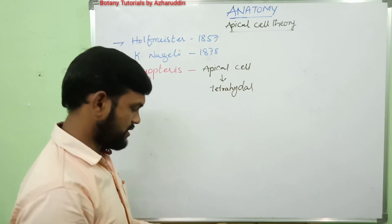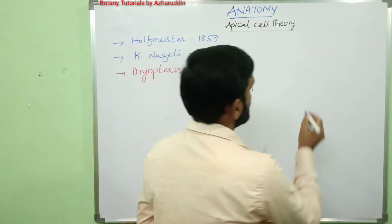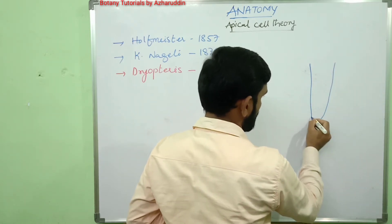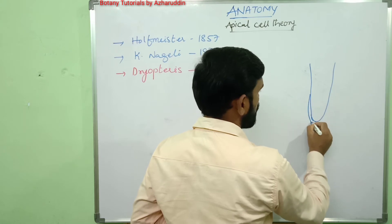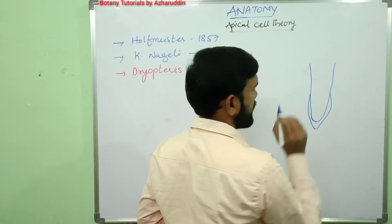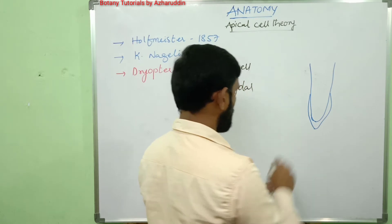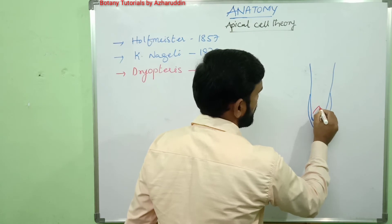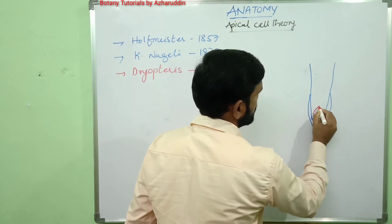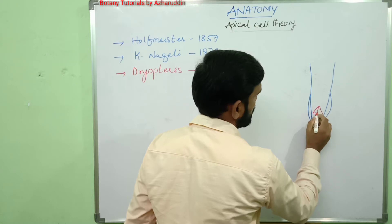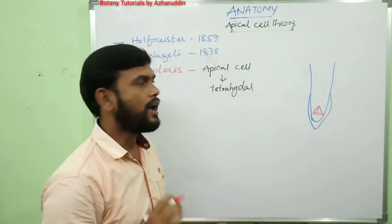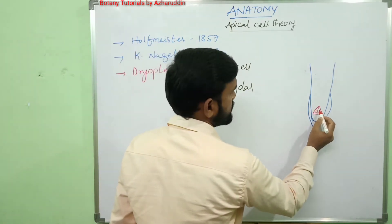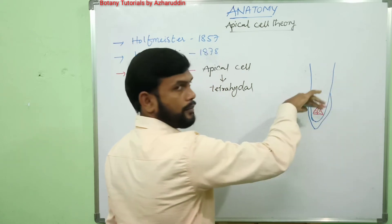For example, here is a root. This is the root apex, which is covered with a root cap. In the root apex, a tetrahedral-shaped apical cell is present. This tetrahedral apical cell has four faces.